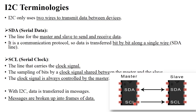SCL stands for Serial Clock Signal. This clock signal carries clock bits while sending and receiving data, because every communication requires a particular clock signal. The clock signal is always controlled by the master. So there are two wires: SDA for sending and receiving data bit by bit, and SCL for providing the clock signal for that data transfer.